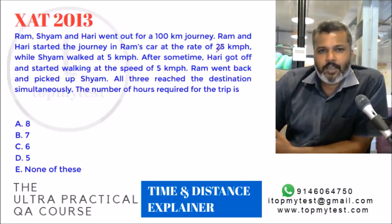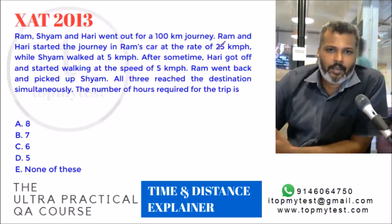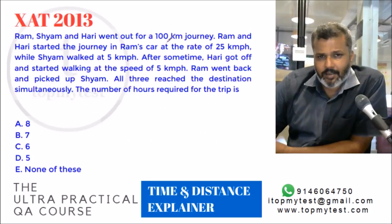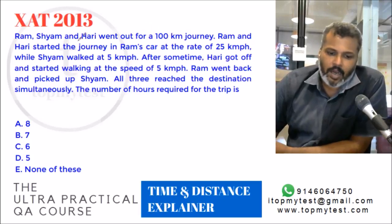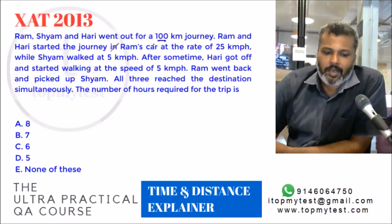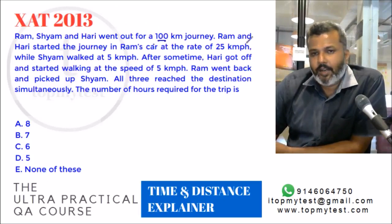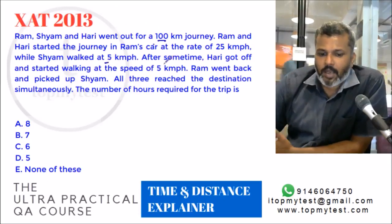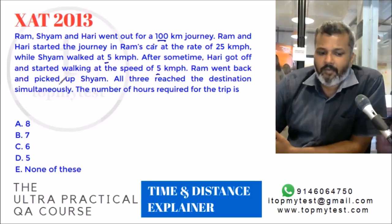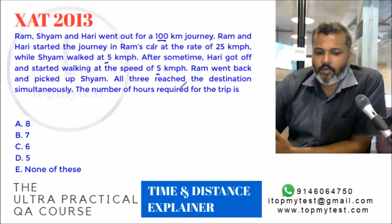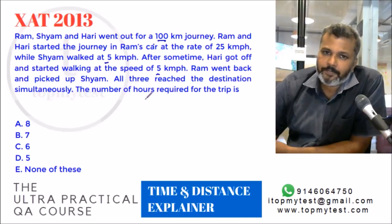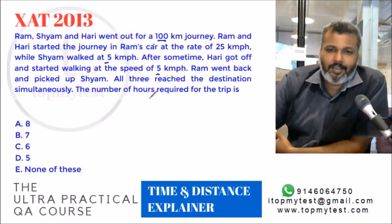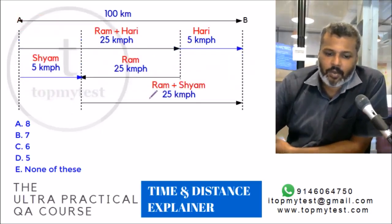Now let's apply proportionality to a slightly trickier question from XAT 2013. Ram, Sham and Hari went on a 100 km journey. Ram and Hari started in Ram's car at 25 km/h while Sham walked at 5 km/h. After some time, Hari got off and started walking at 5 km/h. Ram went back and picked up Sham. All three reached the destination simultaneously. The question is: how many hours did the trip take?